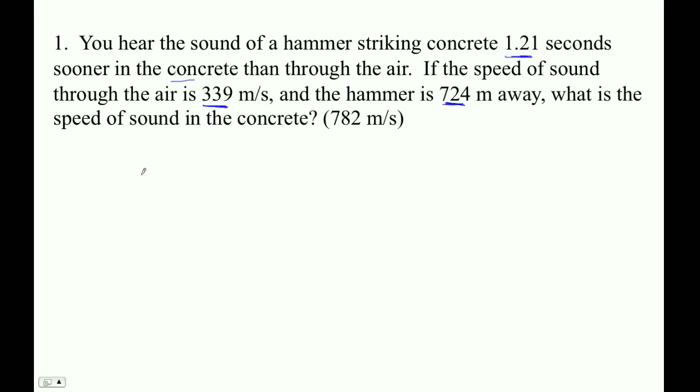That difference in time is going to be the 724 meters divided by 339. That'll be the time it takes to go through the air. And then if we subtract from that the time it takes to go through the concrete, we don't know this velocity. But presumably this is a faster velocity, so therefore it takes less time to go through the concrete. And then if we subtract the two, we get 1.21.